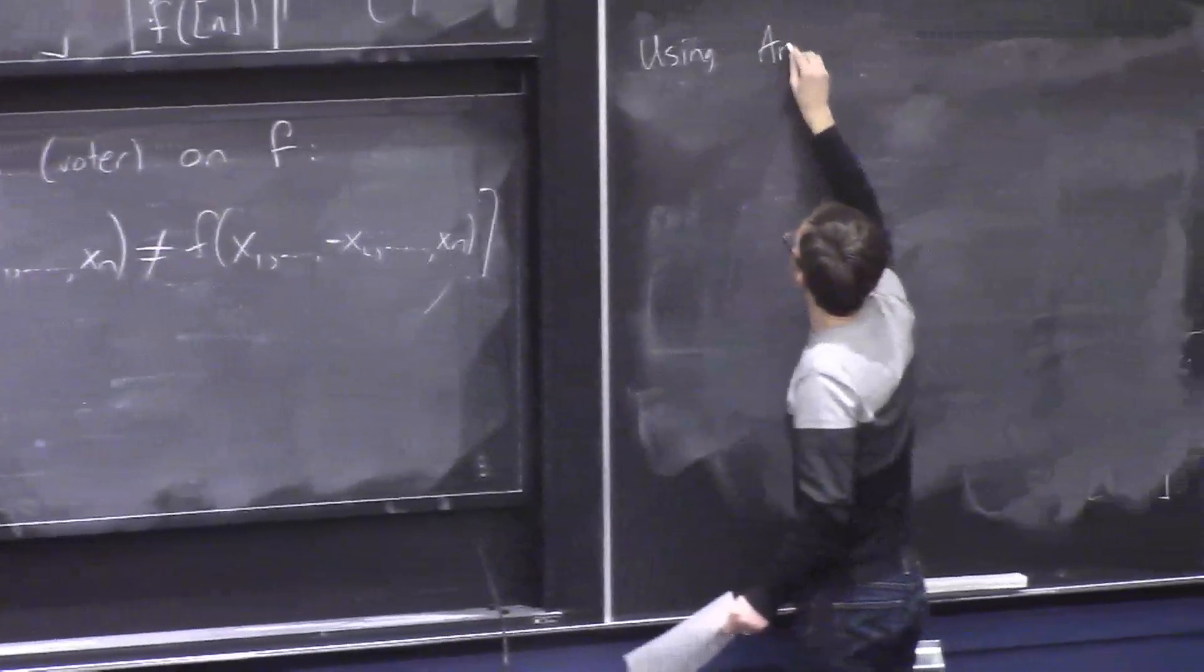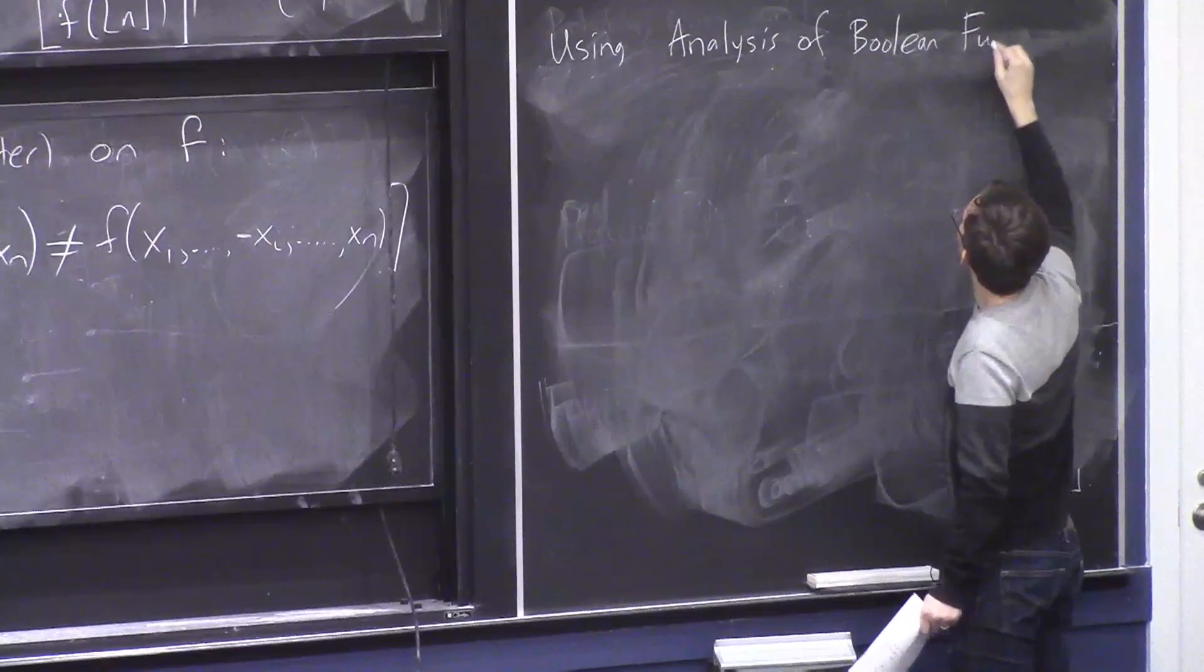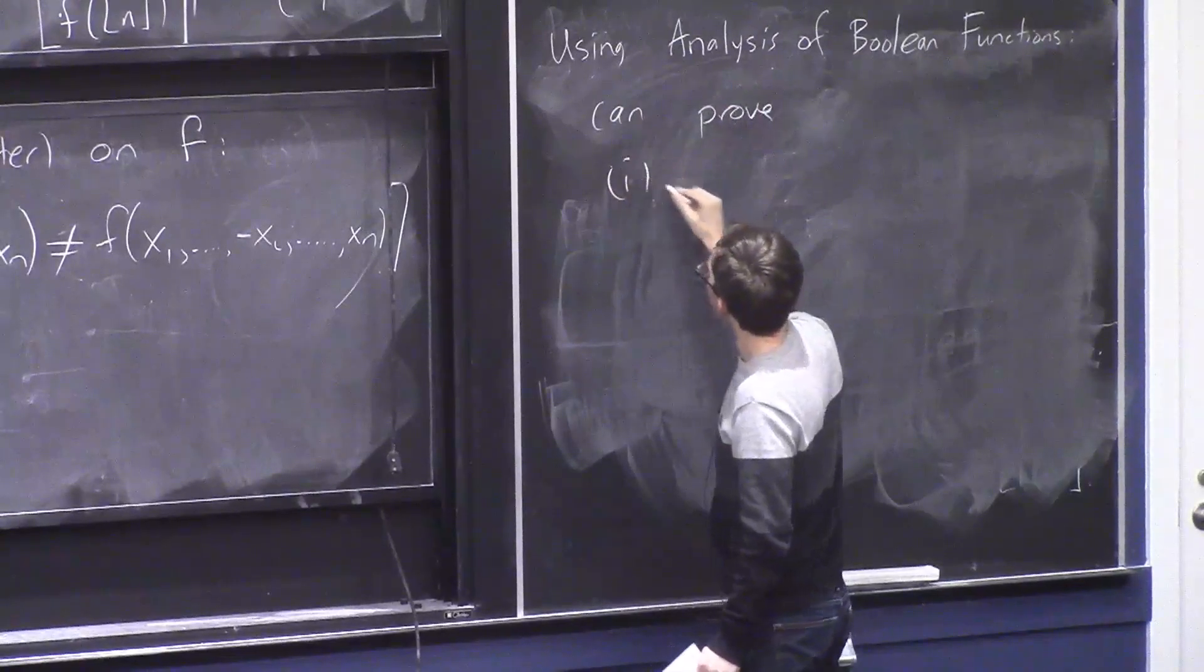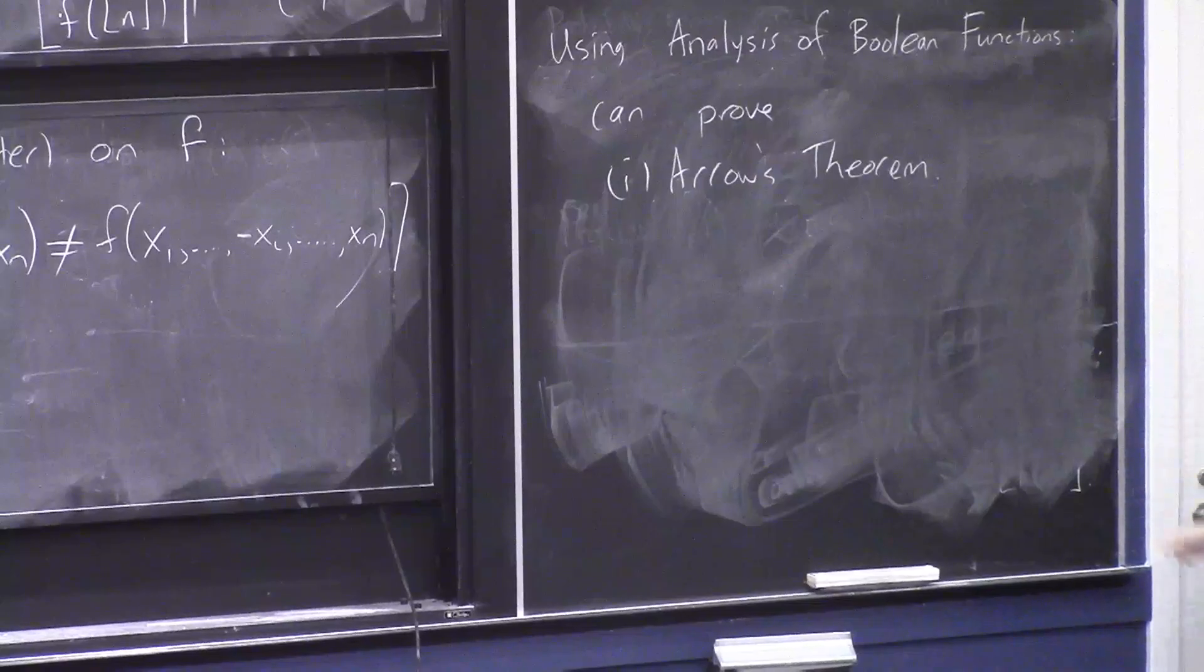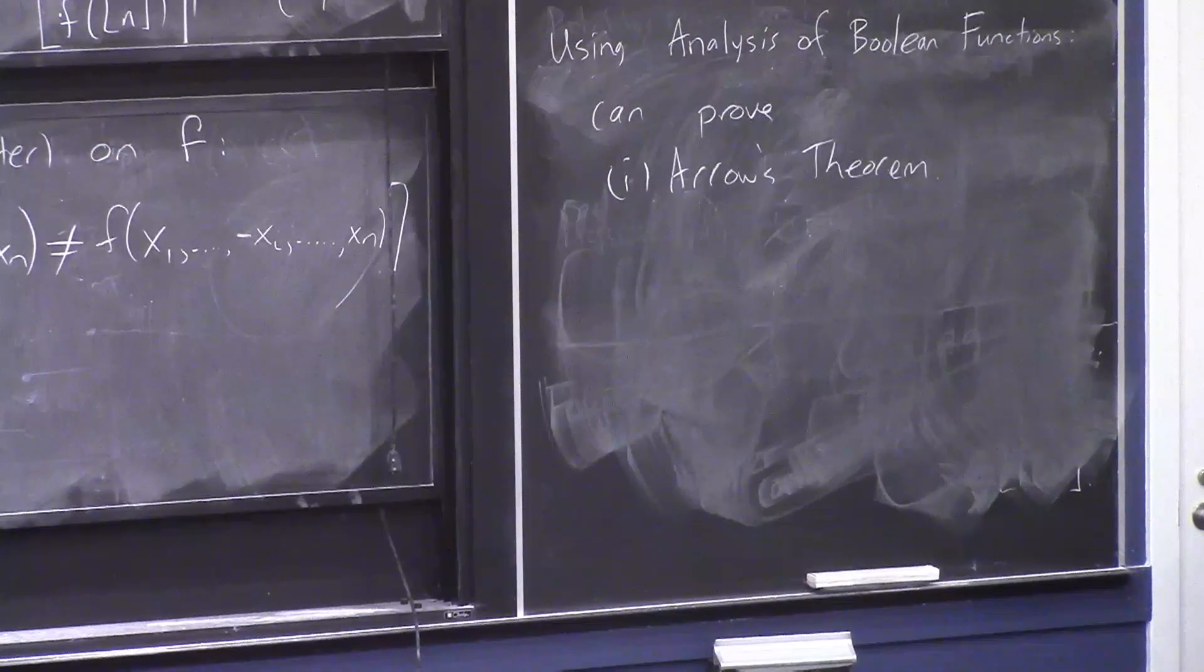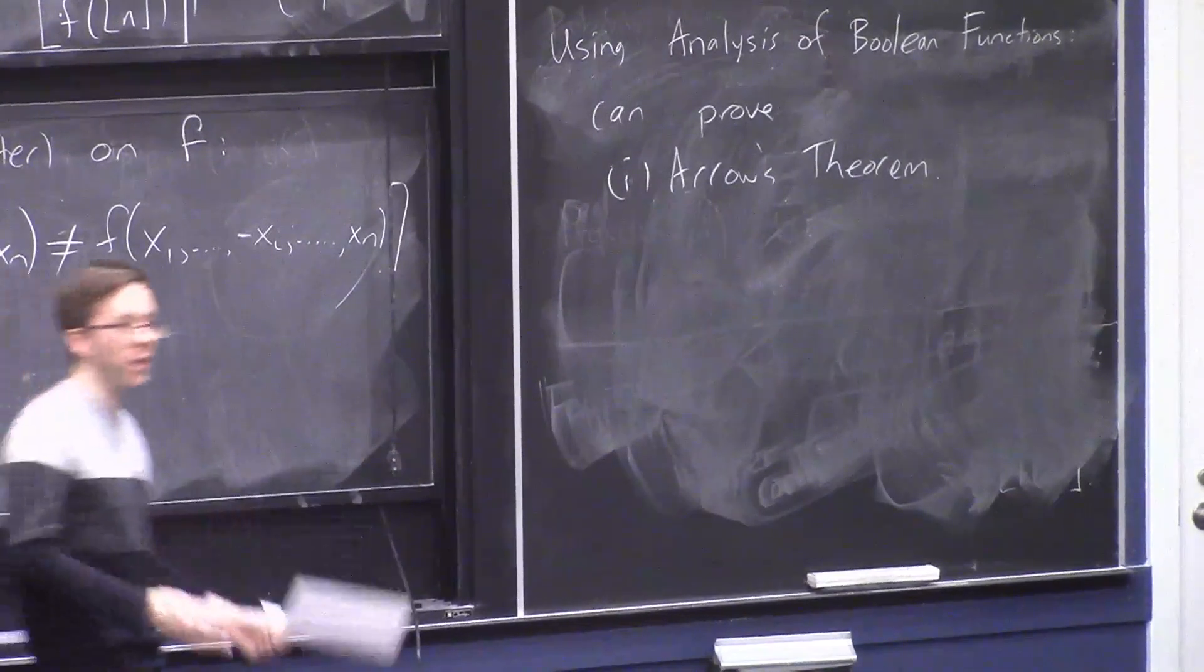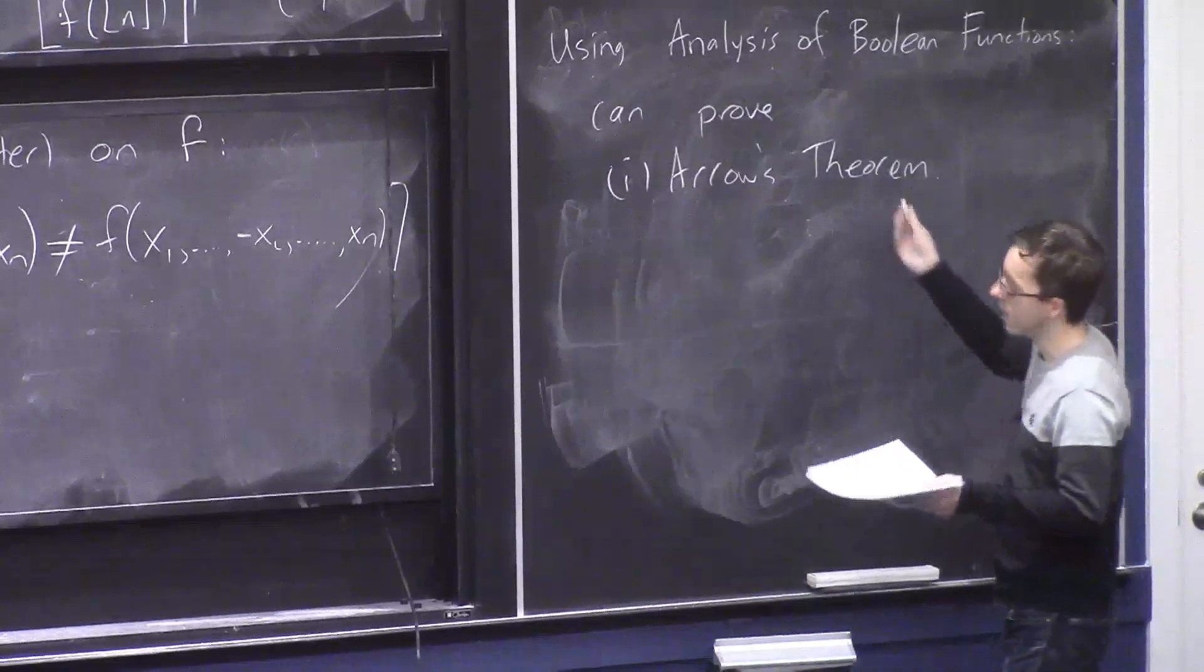Using analysis of Boolean functions, you can prove Arrow's impossibility theorem. This is the most famous theorem, I guess, in social choice. Ken Arrow got the Nobel Prize in economics for it in the 50s. It basically says if you have a three candidate or higher election, and you're trying to come up with a voting rule for picking a winner out of three candidates that satisfies a bunch of natural properties you would consider desirable, the only voting rule that has these properties is dictatorship. So it's considered a negative result for having a nice voting rule when there are three or more candidates.